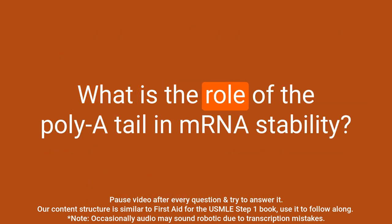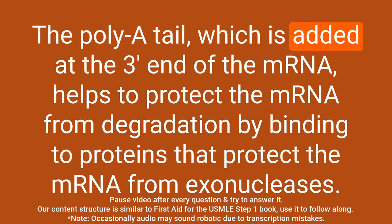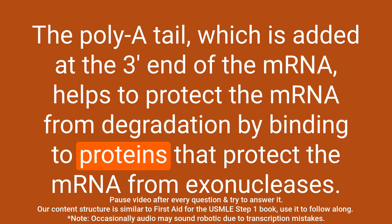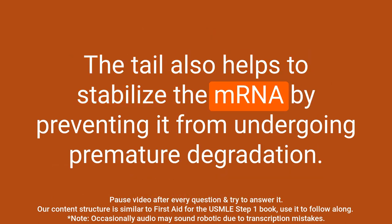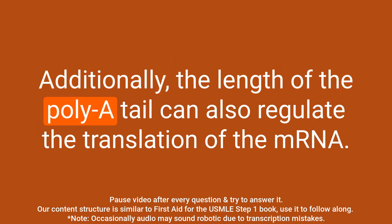Question: What is the role of the poly-A tail in mRNA stability? Answer: The poly-A tail, which is added at the 3' end of the mRNA, helps to protect the mRNA from degradation by binding to proteins that protect the mRNA from exonucleases. The tail also helps to stabilize the mRNA by preventing premature degradation. Additionally, the length of the poly-A tail can also regulate the translation of the mRNA.